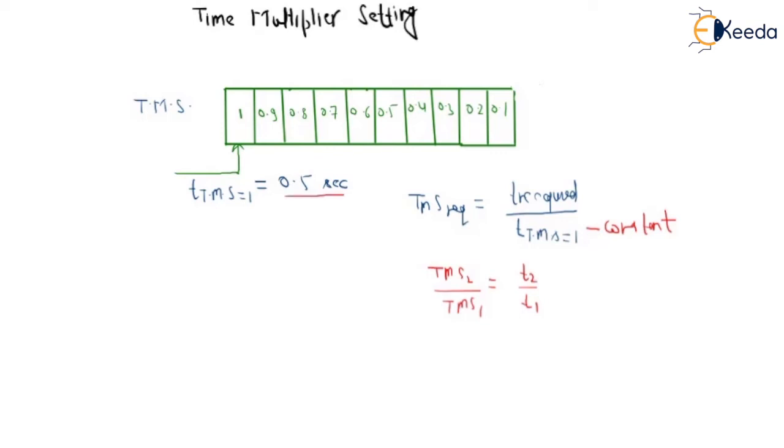Now if you want to change operating time to 0.3 seconds, how much TMS required?